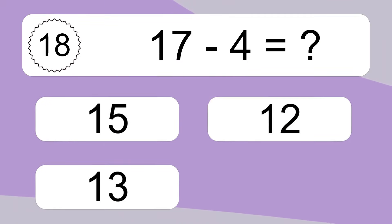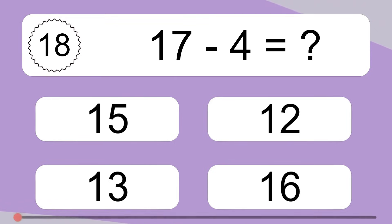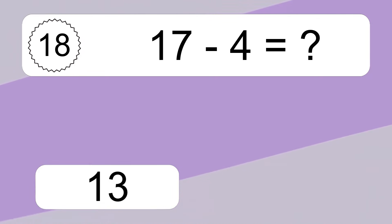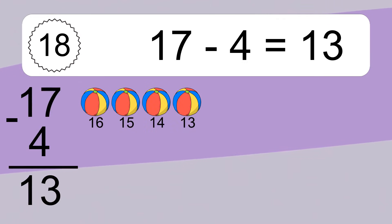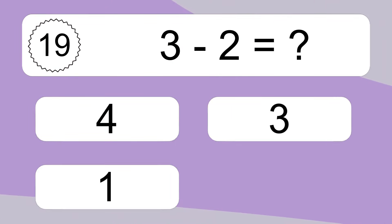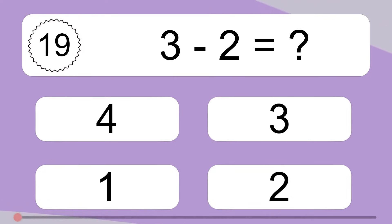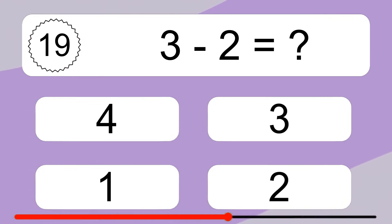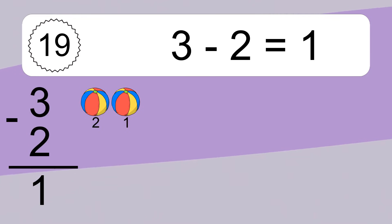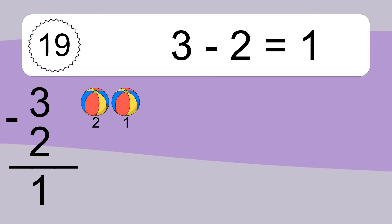17 minus 4 equals what? 17 minus 4 equals 13. Let's count it: 16, 15, 14, 13. 3 minus 2 equals what? 3 minus 2 equals 1. Let's count it: 2, 1.